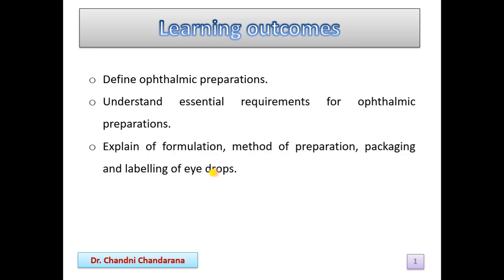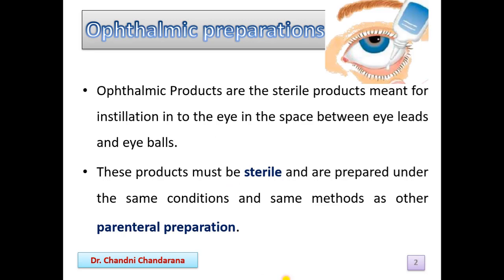In this video we will see eye drops in detail. Ophthalmic products are the sterile products made for installation into the eye, in the space between the eyelids and eyeballs. We can apply the ophthalmic preparations depending on the particular preparation. Generally we can apply preparations like eye drops, eye ointment, and eye suspension. These products must be sterile and are prepared under the same conditions and methods as parenteral preparations.